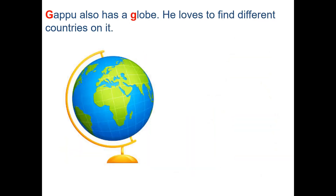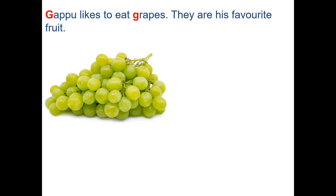Gappu also has a globe. He loves to find different countries on it. Gappu likes to eat grapes — they are his favorite fruit.